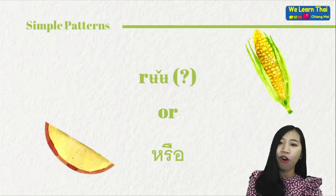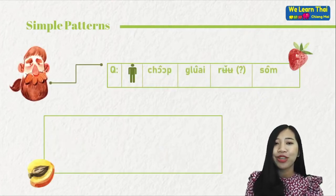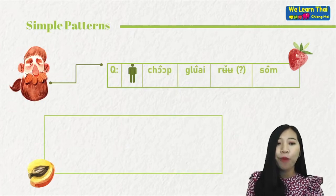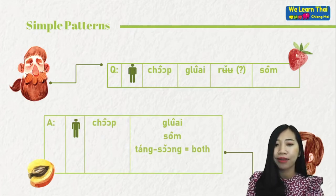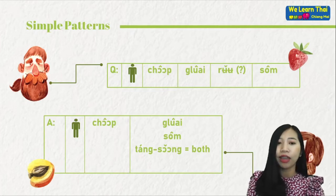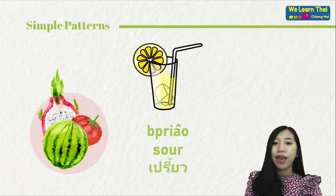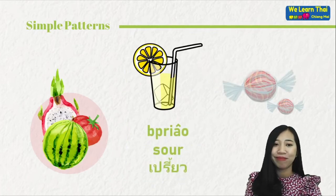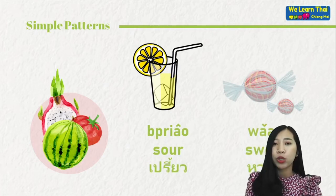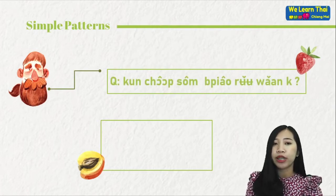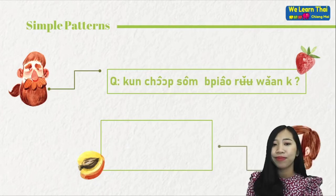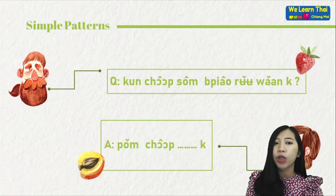For example: คุณชอบกล้วยหรือส้มคะ — Do you like banana or orange? ดิฉันชอบกล้วยค่ะ — I like banana. ดิฉันชอบส้มค่ะ — I like orange. Or you can say ดิฉันชอบทั้งสองค่ะ — I like both. เปรี้ยว means sour, หวาน means sweet. คุณชอบส้มเปรี้ยวหรือหวานคะ — ดิฉันชอบส้มหวานค่ะ.